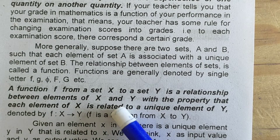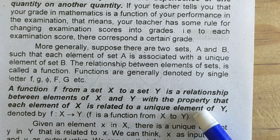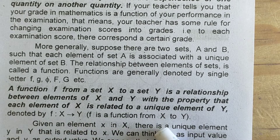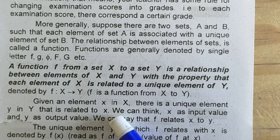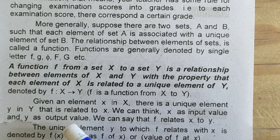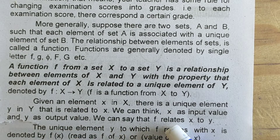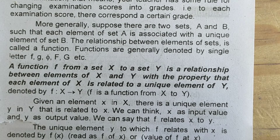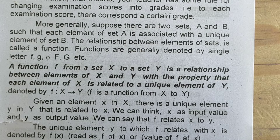A function F from a set X to a set Y is a relationship between set X and Y with the property that each element of X is related to a unique element of set Y. Each element of set X has a unique image in set Y. Given an element X in X, there is a unique element Y in Y that is related to X. We think of X as the input value and Y as the output value. The unique element Y to which F relates X is denoted by F(X), read as 'F of X' or 'value of F at X.'